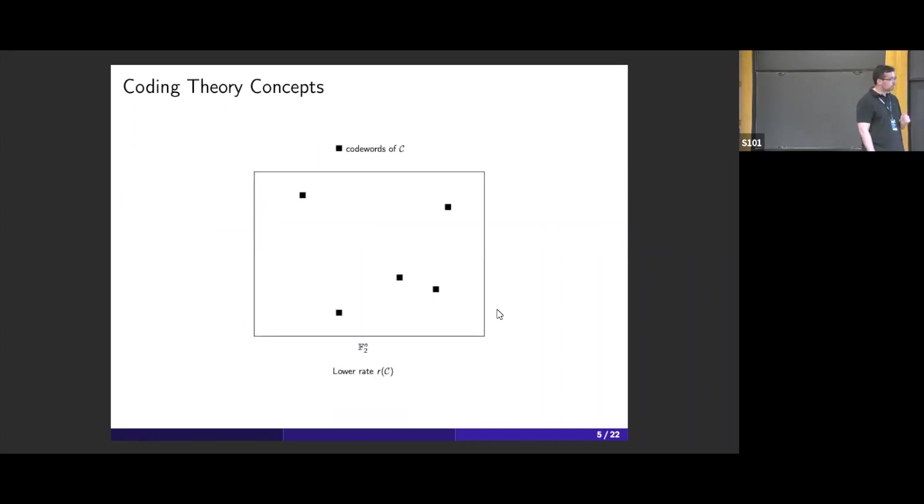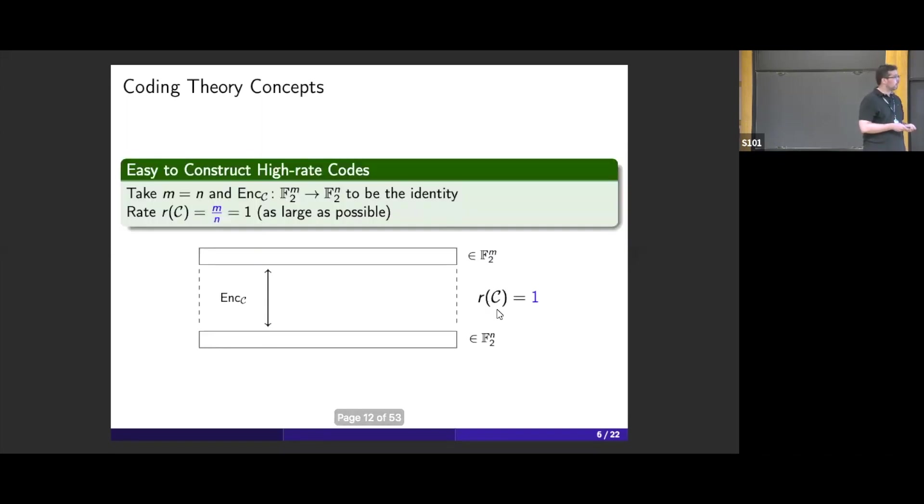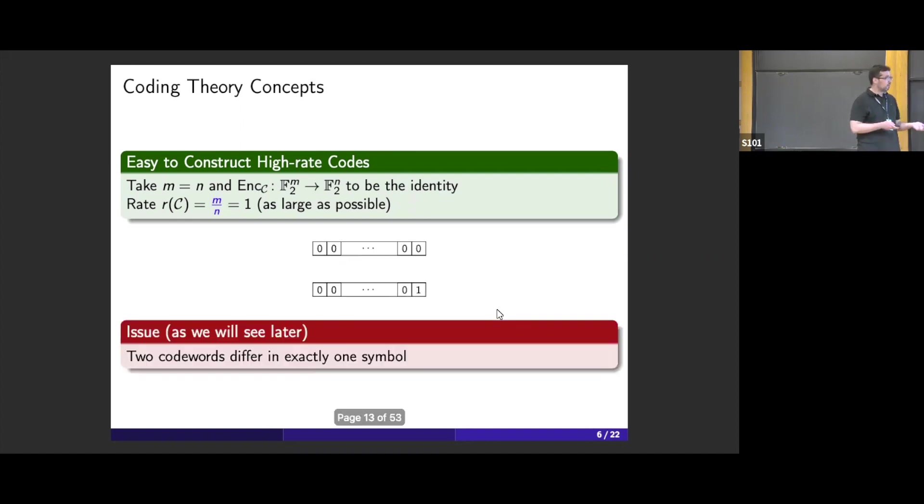It's very easy to achieve high rate in isolation. You can just take the encoding map to be the identity. You take n to be equal to N, and then you take the identity map. In terms of rate, it's one, it's as large as possible. But as you might expect, it may be bad. You are going to have two code words that only differ by one position.